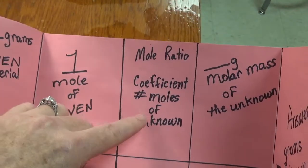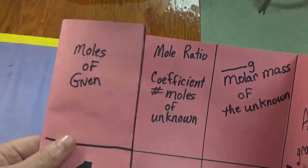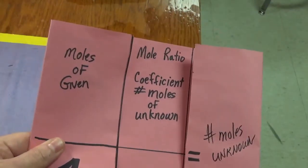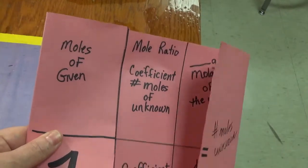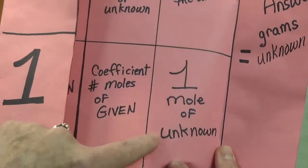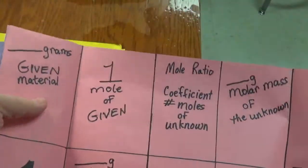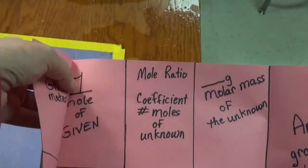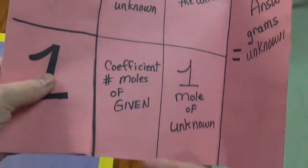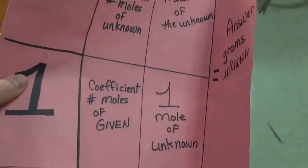And the coefficient number of moles of unknown goes here — that's the same column that was there when we had it closed. At the bottom it will be moles of unknown, and that will be a 1, just as this was a 1 here — 1 mole of unknown. To clarify, that previous one was mole of given, and this one is 1 mole of unknown.